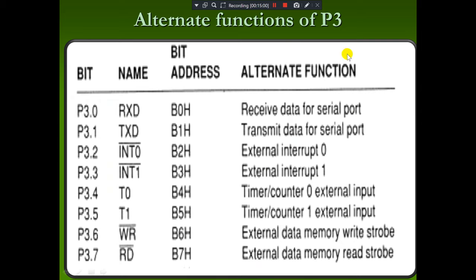The alternate functions of Port 3: Port 3.0 can be used as RXD (receive data for serial port, bit address B0H); Port 3.1 as TXD (transmit data for serial port); Port 3.2 as external interrupt 0; Port 3.3 as external interrupt 1; Port 3.4 as Timer/Counter 0 external input; Port 3.5 as Timer/Counter 1 external input; Port 3.6 as Write bar (WR); Port 3.7 as Read bar (RD). These are the eight alternate functions of Port 3 pins.